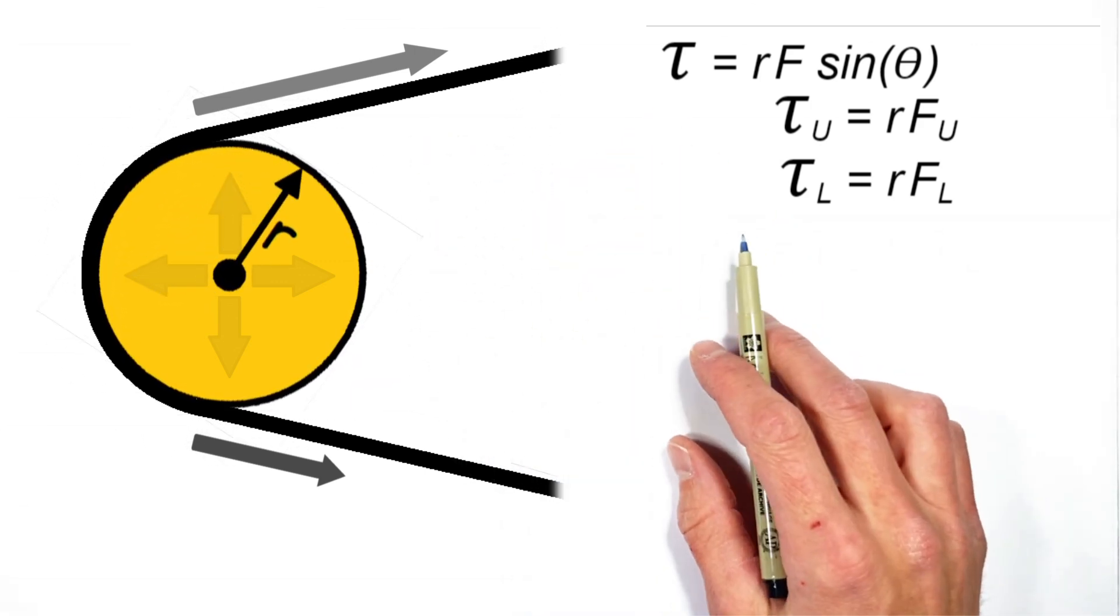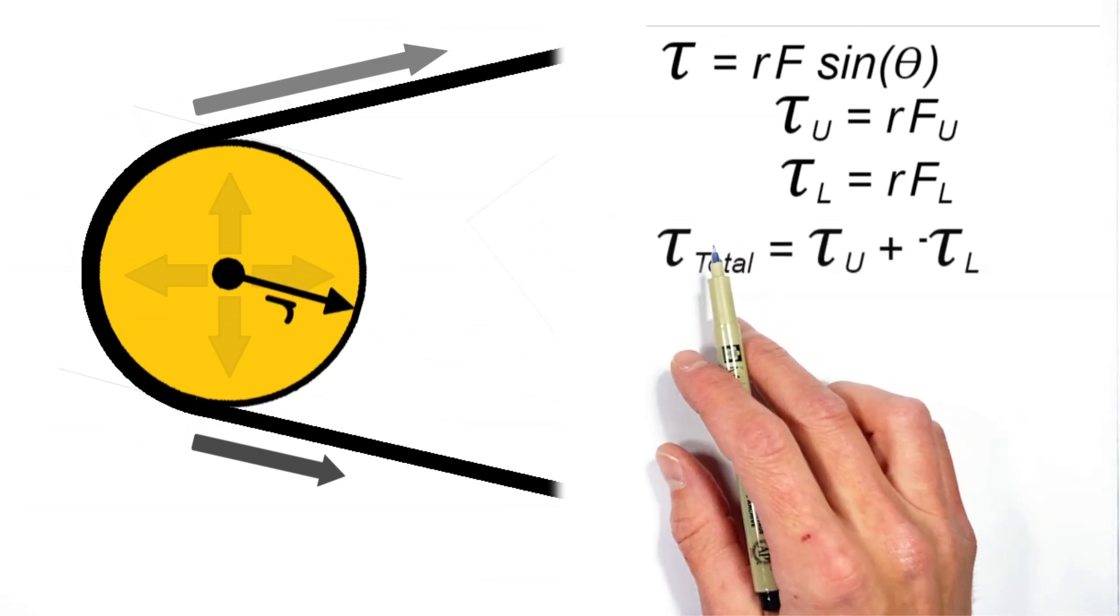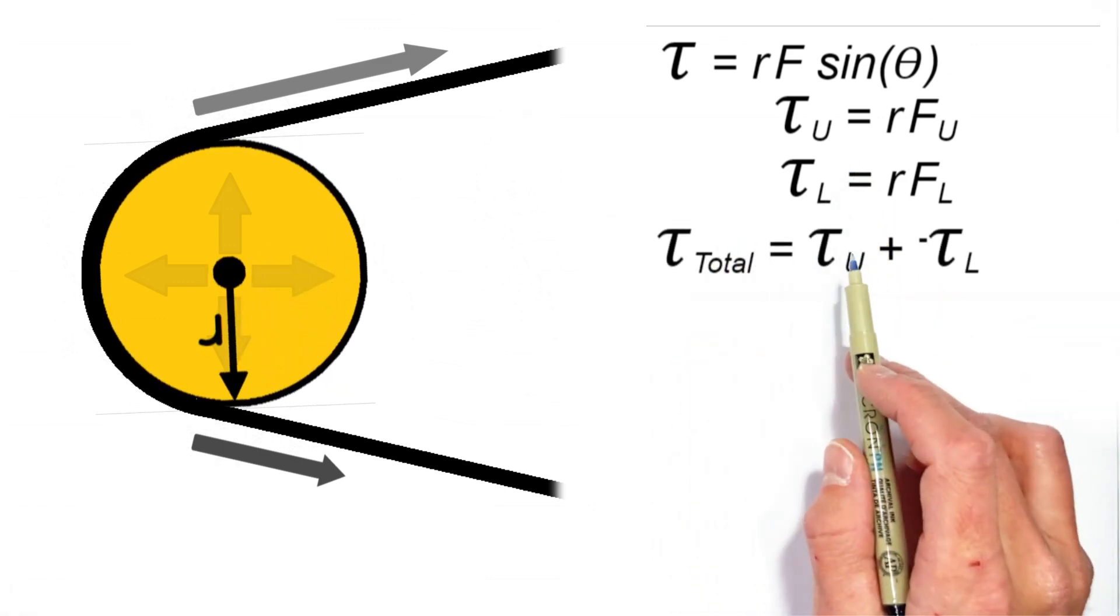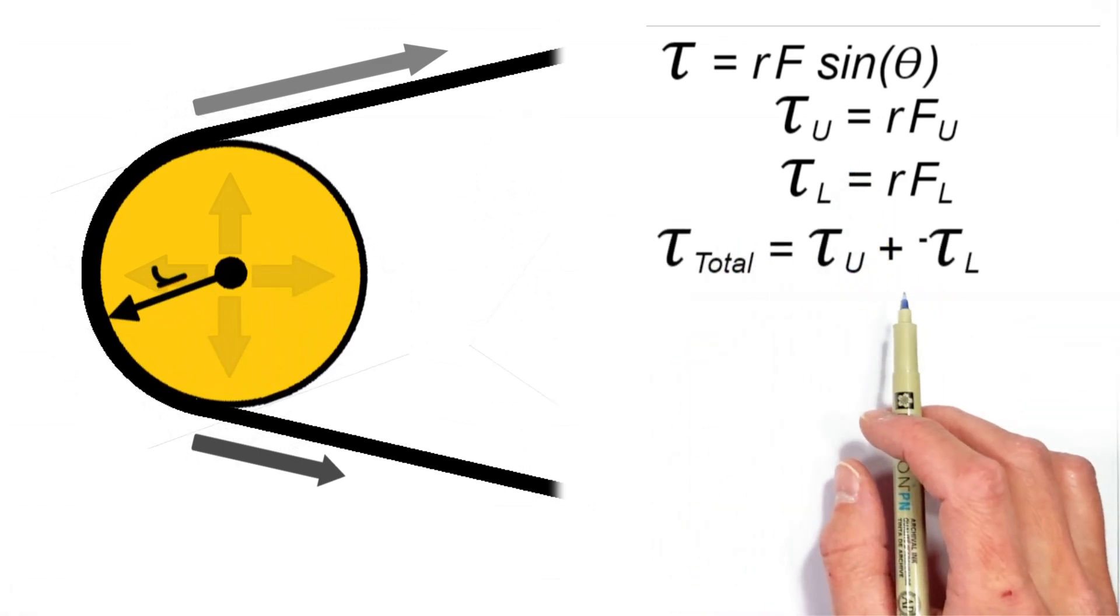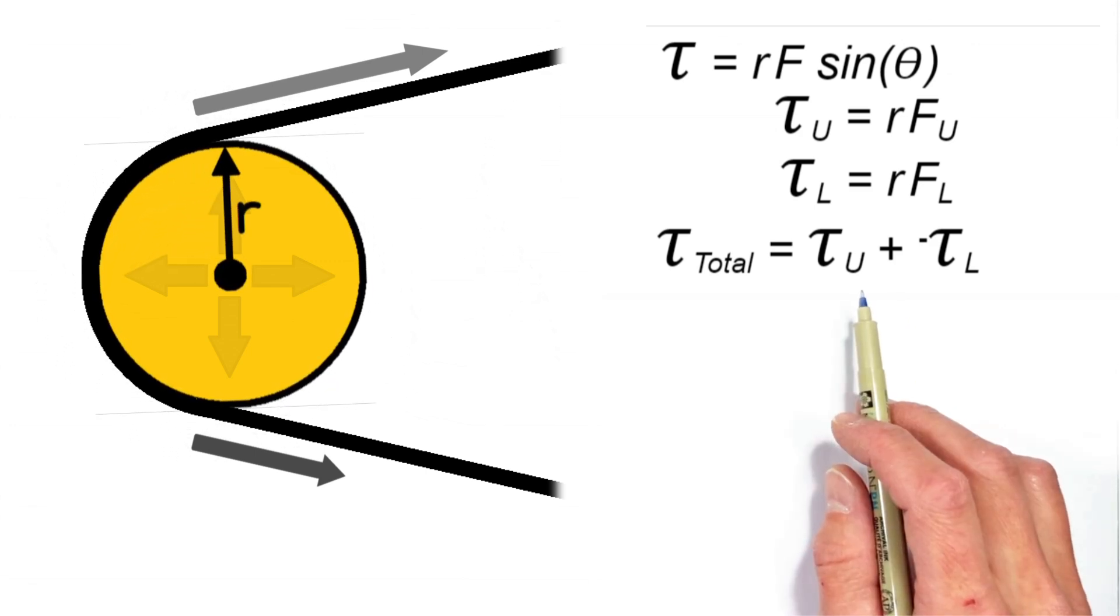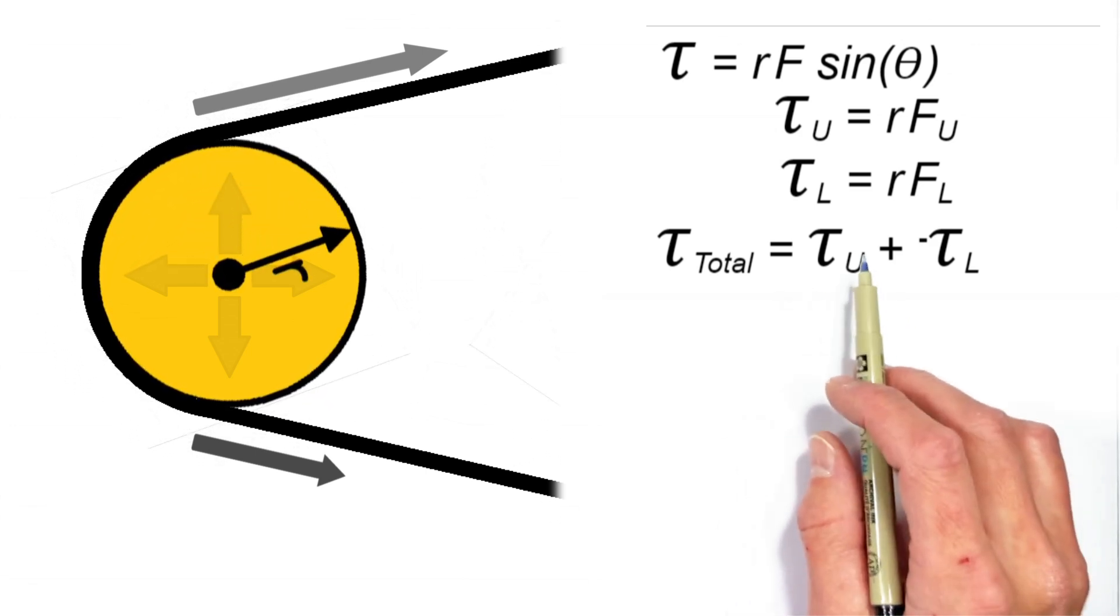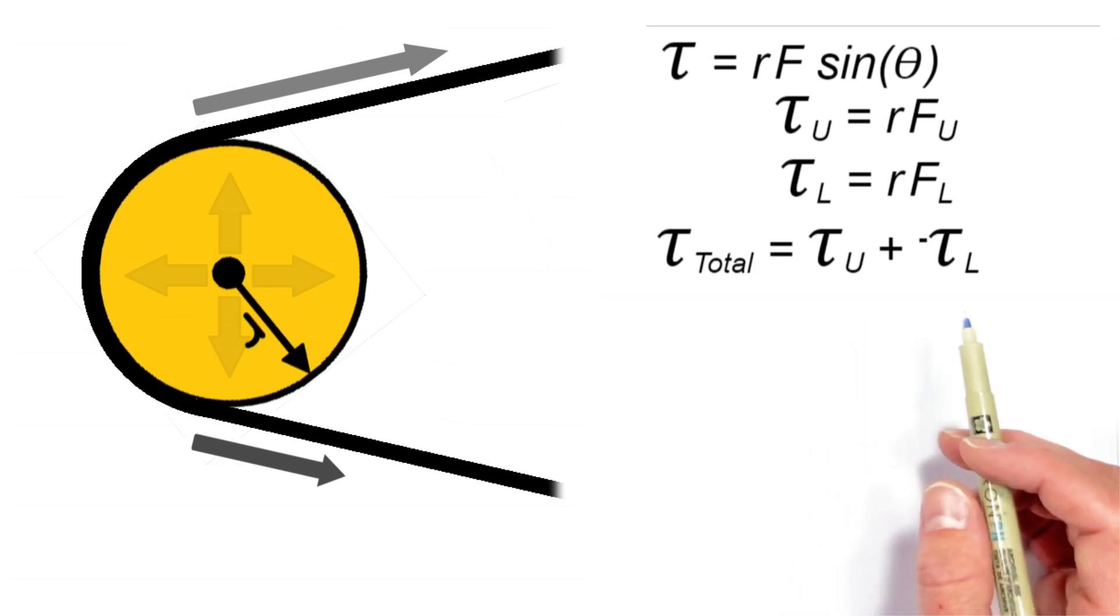And so, looking at the total torque over here, we can say that the total torque is really just the sum of our two individual torques by the two sides of the belt. And the way we show these torques are competing is by saying that one of these torques is in the negative direction.